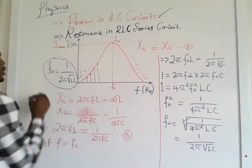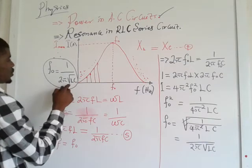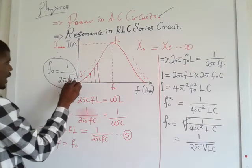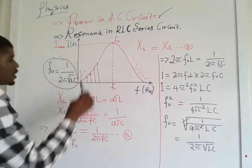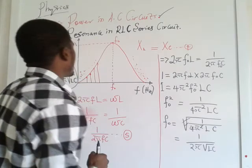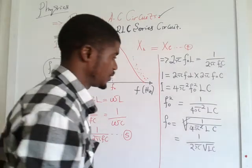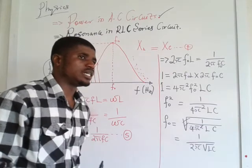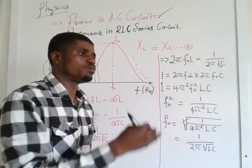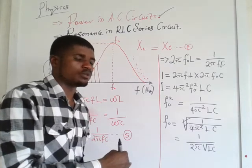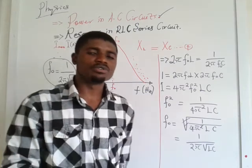This is the equation for resonant frequency, where L is the inductance of the inductor, C is the capacitance of the capacitor, and F-naught is the resonance frequency. With this, we have come to the end of today's class. In our subsequent videos, I will be using all these equations to do a whole lot of calculations. Thank you and stay blessed.